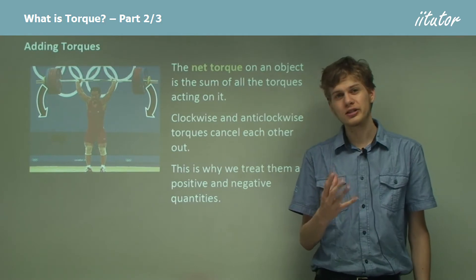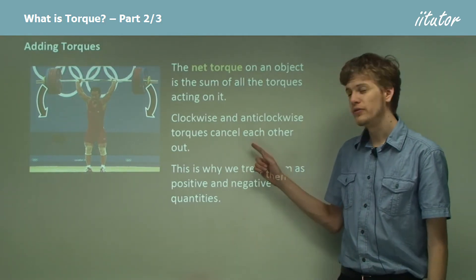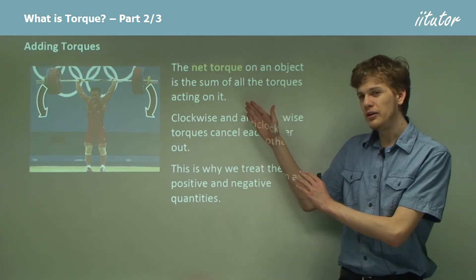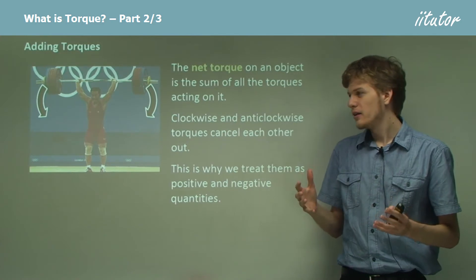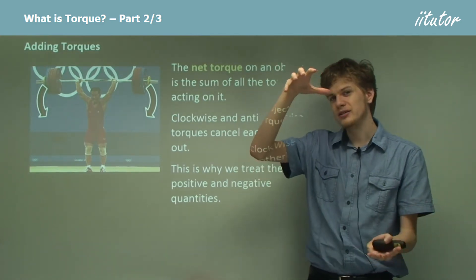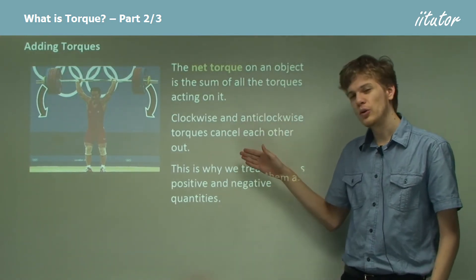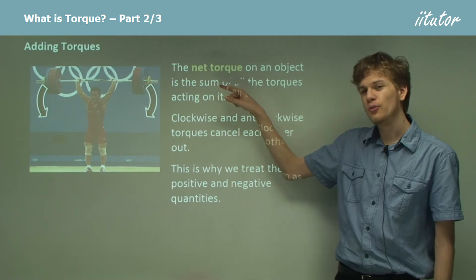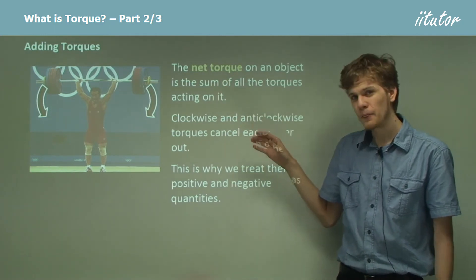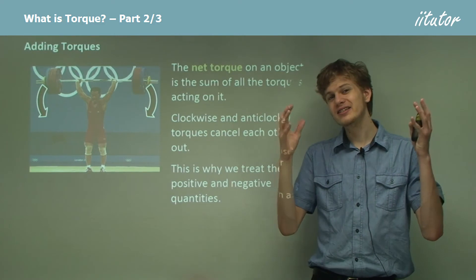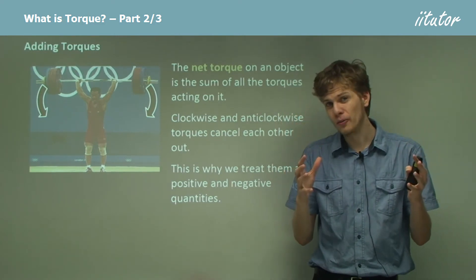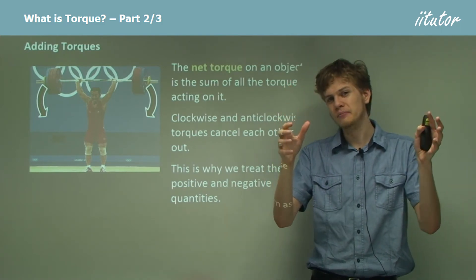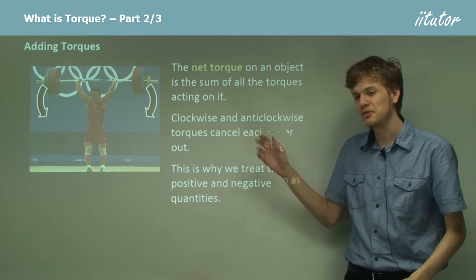We can see an example of two torques cancelling each other out in this photograph over here. If the torque on one side of the barbells was greater, then the whole set of barbells would start to rotate and fall down to one side, assuming we held them right in the middle. But because there's equal torque from both the right side and the left side, the net torque on the weight is absolutely zero, so it doesn't turn left or right — it just moves in a straight line. In fact, it would travel straight down if it weren't being held up.